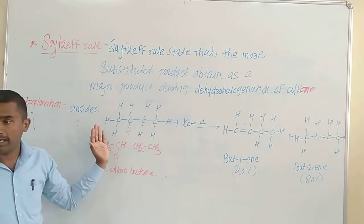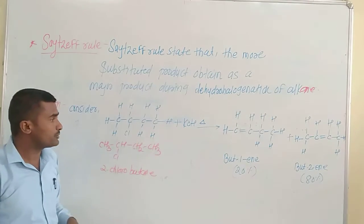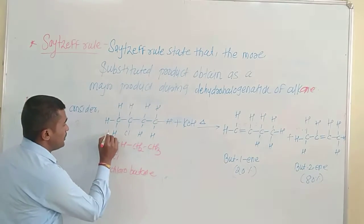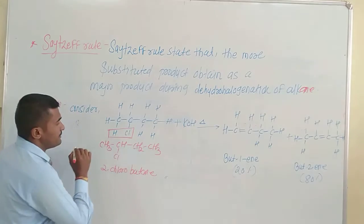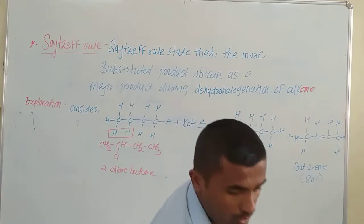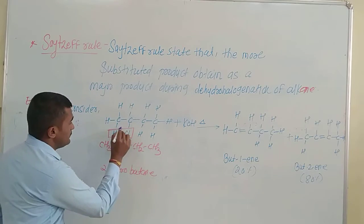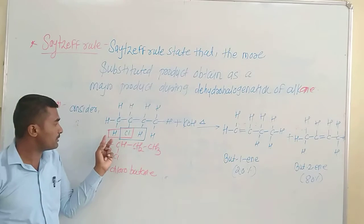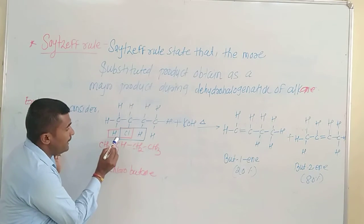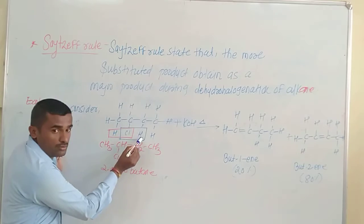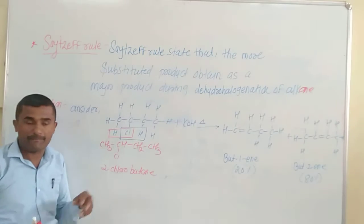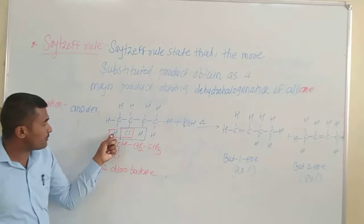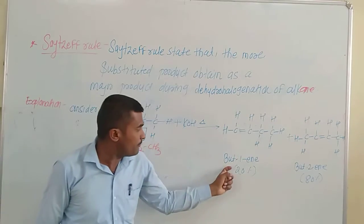There is a removal of hydrogen and halogen. We get two products: but-1-ene and but-2-ene. Either this hydrogen and this chlorine get removed, or this hydrogen and this chlorine get removed. In this dehydrohalogenation, if these hydrogen and this chlorine get removed, the product is but-1-ene.